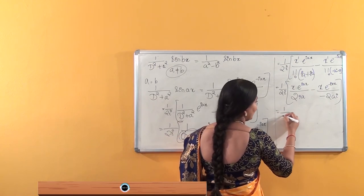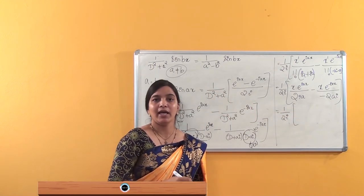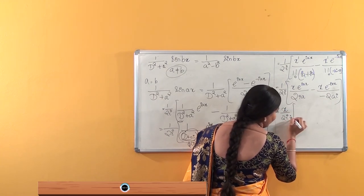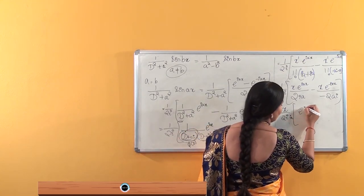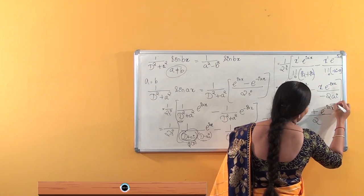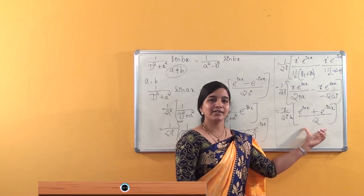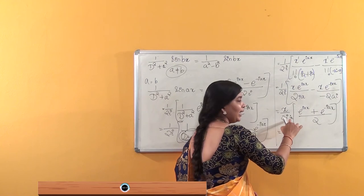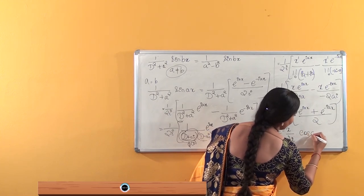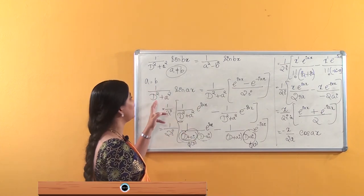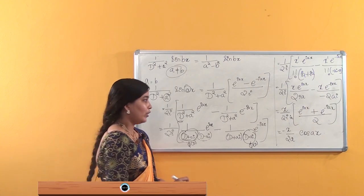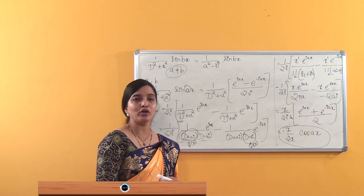Taking x/(2ia) common from both terms, we remain with [e^(iax) + e^(−iax)] / 2, which is the formula for cos(ax). Since i·i = i² = −1, the result simplifies to −x/(2a)·cos(ax). So for any problem of the form 1/(D²+a²)·sin(ax) where both values are equal, the answer is −x/(2a)·cos(ax).